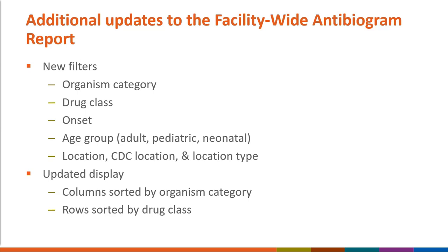New filters and display options increase the ability to customize the antibiogram output. These changes include the ability to filter by organism category — fungal, gram-negative, or gram-positive — drug class, onset (healthcare facility onset or community onset), age group (adult, pediatric, or neonatal), and location using several location variables. The display now appears with columns sorted by organism category and rows sorted by drug class.